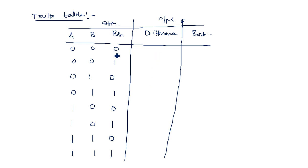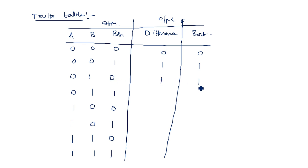Now, zero minus zero minus zero gives difference 0, borrow 0. Zero minus zero minus one gives difference 1, borrow 1. And zero minus one minus zero also gives difference 1, borrow 1.